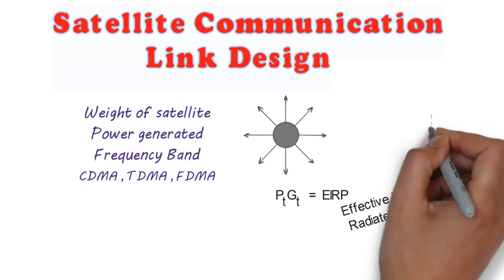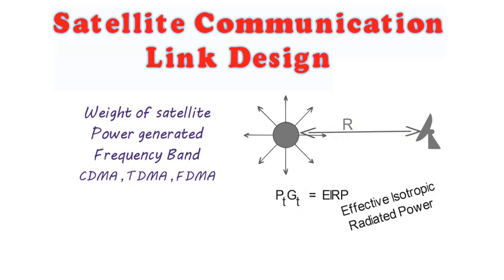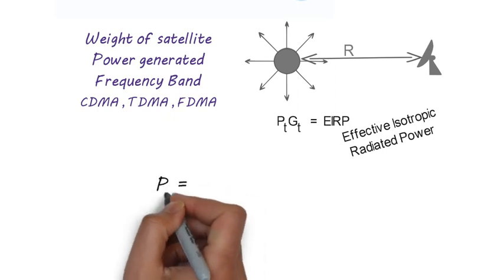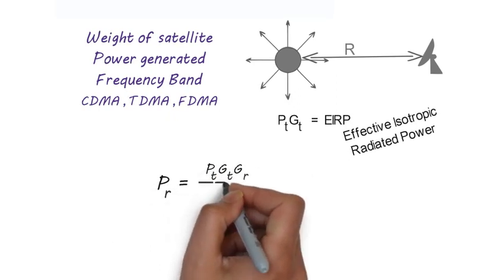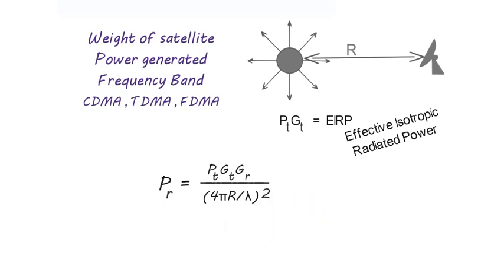Now if there is a receiving antenna at a distance of r meters from the transmitting source, then according to Friis transmission equation, received power PR will be equal to PT GT into GR divided by 4πr divided by λ whole square. This equation is also called link equation.